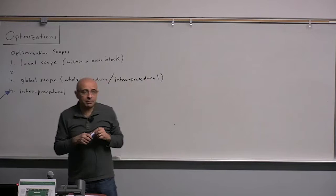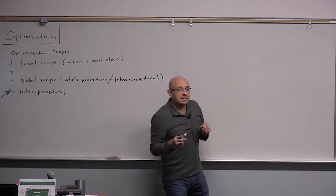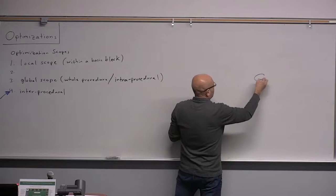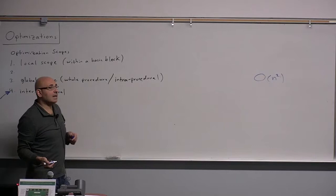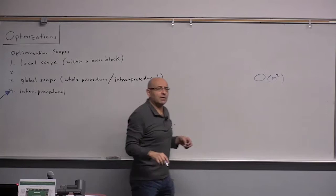If a compiler is trying to solve an NP-complete problem optimally without any limits, the compiler may not terminate. Some compiler optimization algorithms are super-linear, like N squared. Even N squared, if you apply it to a large number of instructions, can take a long time.